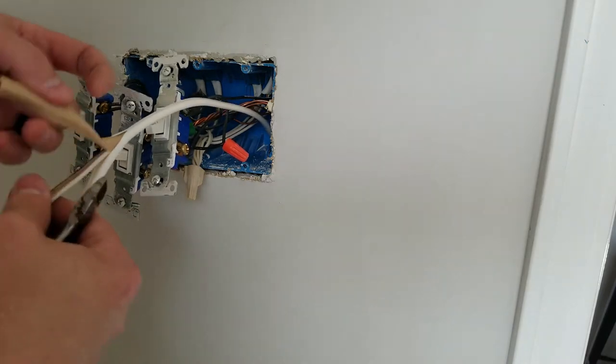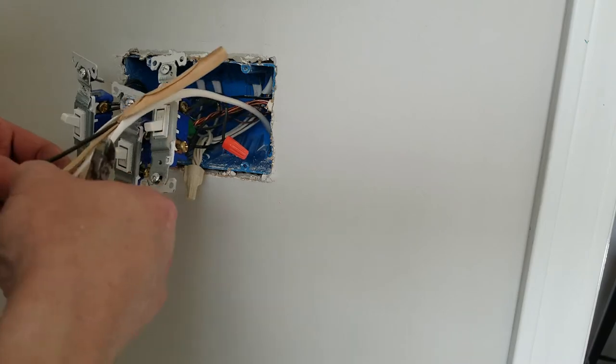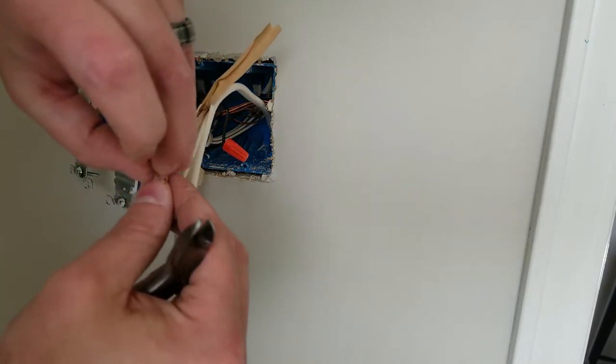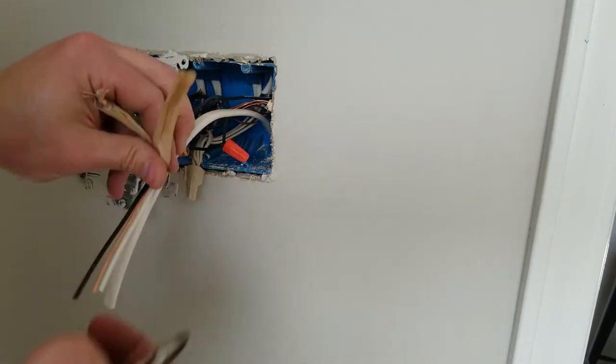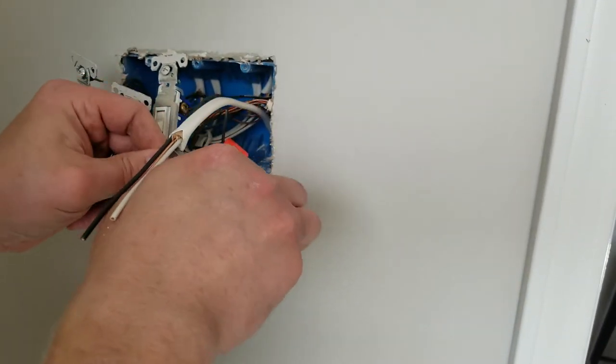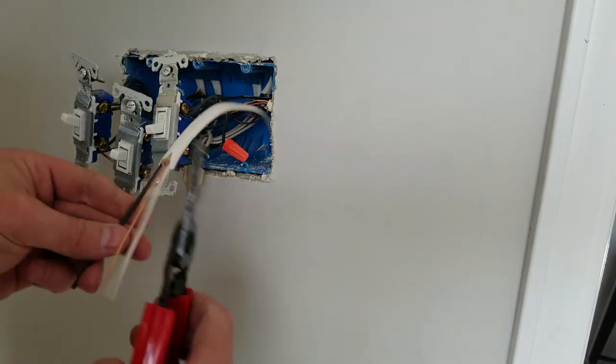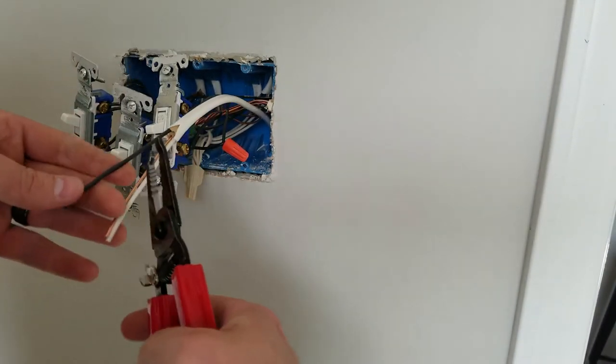So once I cut it open I'm going to fold the plastic sheathing and craft paper back. I'll clip all this off just using a pair of wire snippers. Here I'm using my wire strippers and I'm going to remove about half an inch of insulation off of each of these wires.